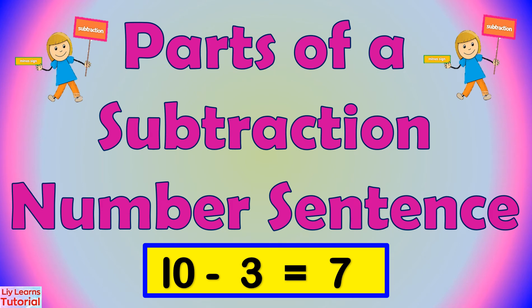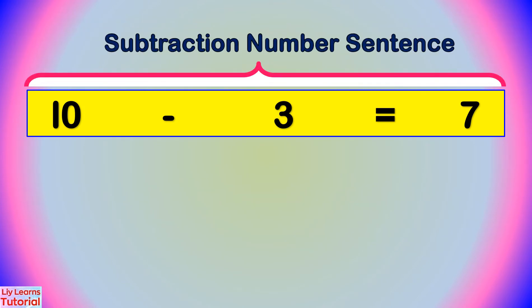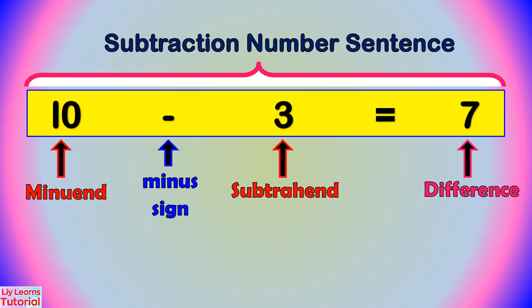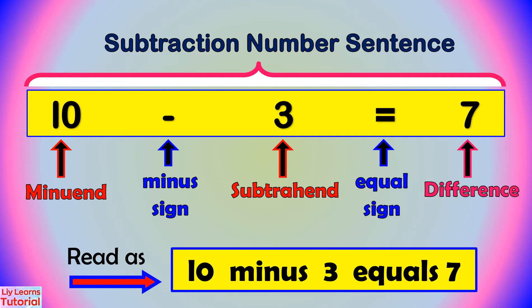Let's look at the parts of a subtraction number sentence. This is a subtraction number sentence. 10 is the minuend. 3 is the subtrahend. 7 is the difference. This is a minus sign, and this is an equal sign.